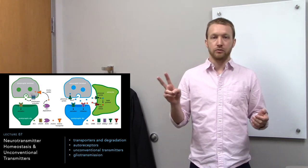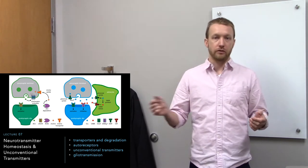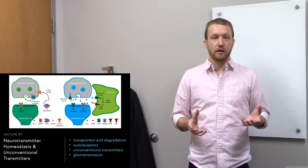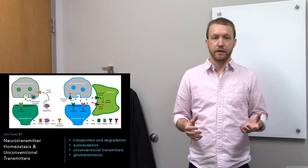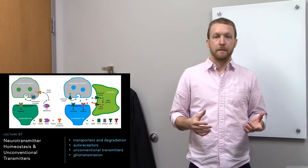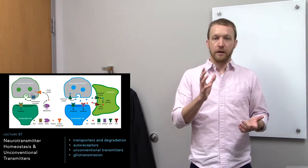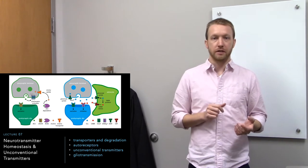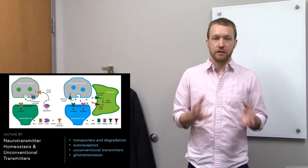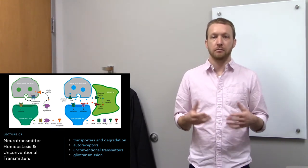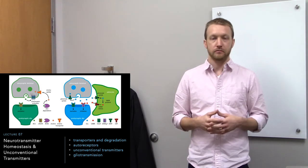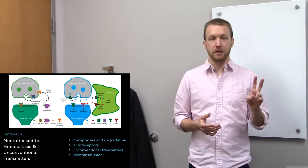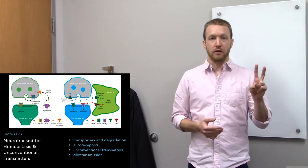The other option is to break down that neurotransmitter. There are enzymes floating around in the synapse that target a subset of neurotransmitters. When they either remove or add small chemical groups to them, that changes their structure and changes their ability to bind to their receptor. Some neurotransmitters will be regulated by both mechanisms — transport and degradation.